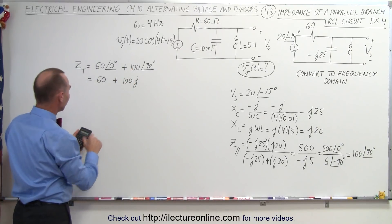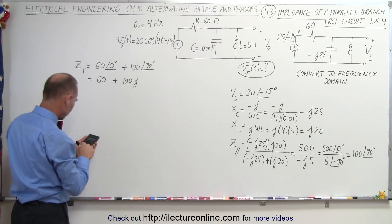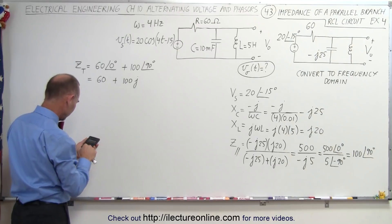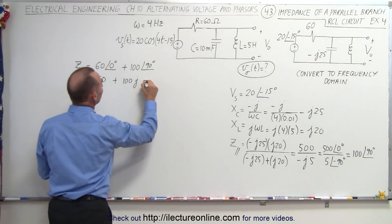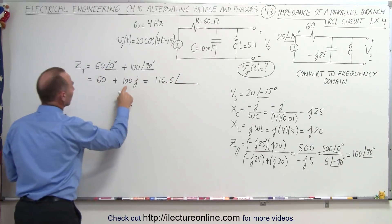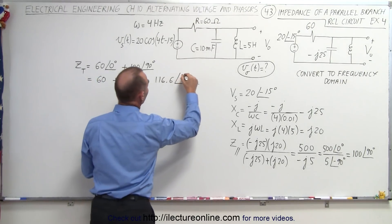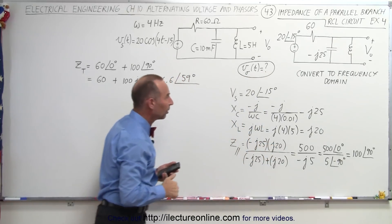Converting that back into polar form: the magnitude is the square root of 100 squared plus 60 squared, which equals 116.6. The phase angle is the inverse tangent of 100 divided by 60, which gives us 59 degrees. So the total impedance of the three components is 116.6 at a phase angle of 59 degrees.